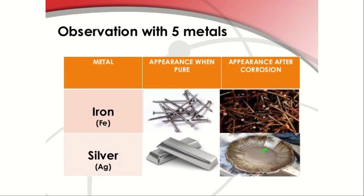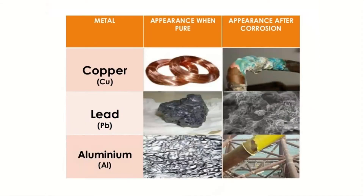Observation with five metals: you can see iron — its appearance when pure and its appearance after corrosion. Next is silver — its appearance when pure and after corrosion. In the same way, copper, lead, and aluminium are shown before corrosion and after corrosion.